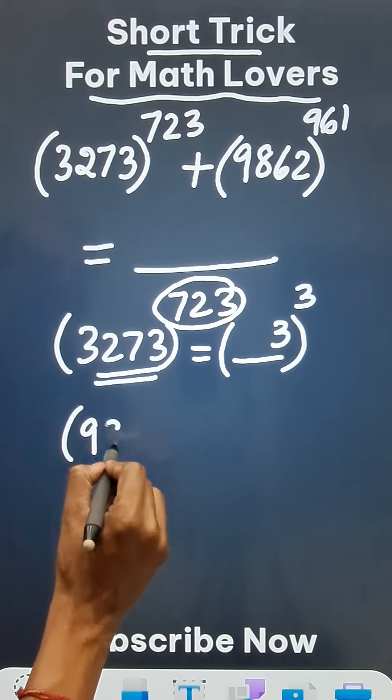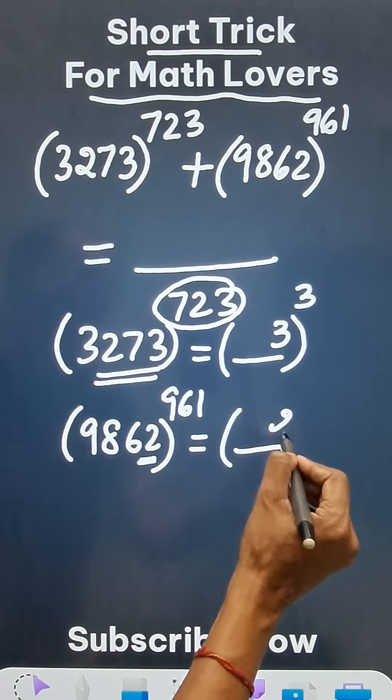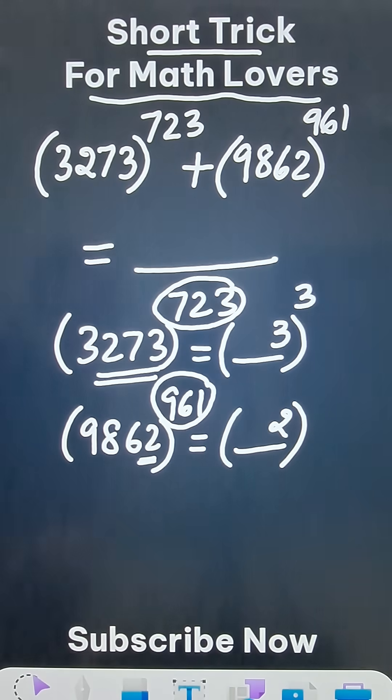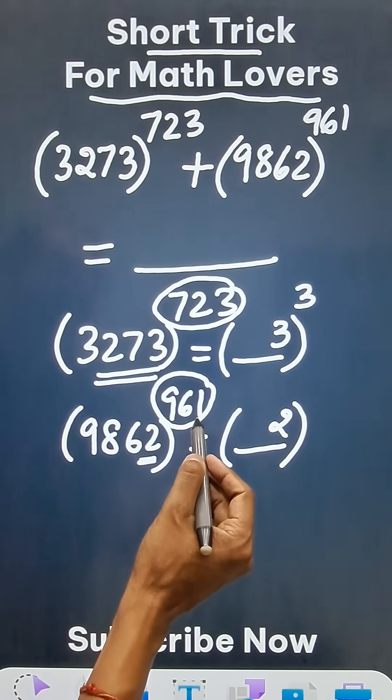And similarly for 9862 raised to power 961, I am worried about the unit digit here which is 2. And when you divide 961 by 4, 960 is divisible by 4, so that will give you a remainder of 1.